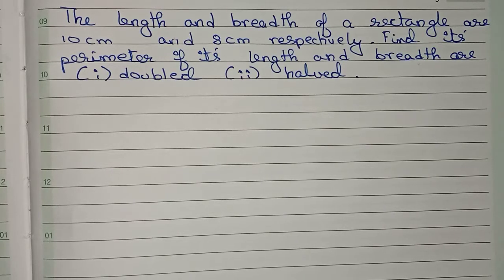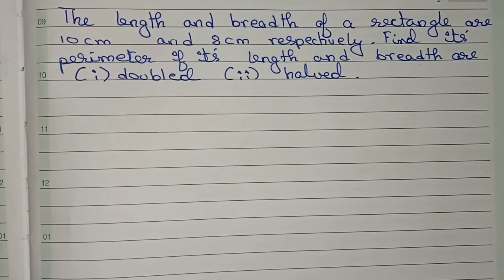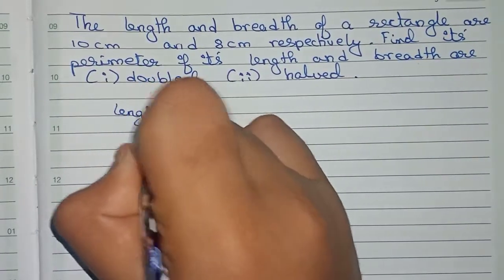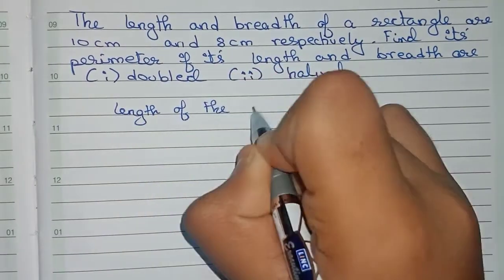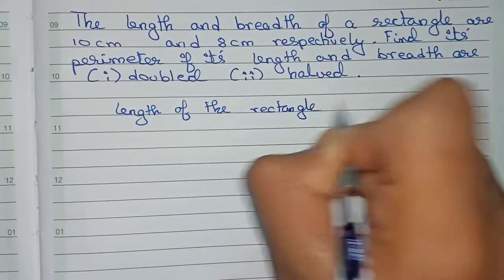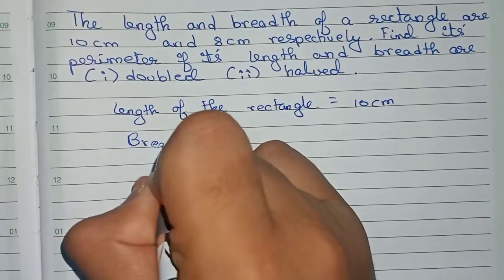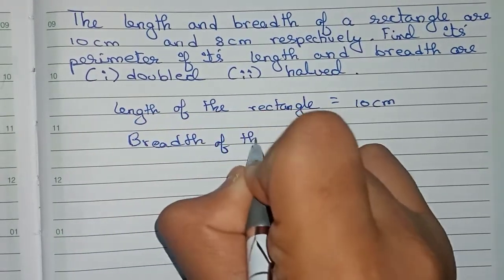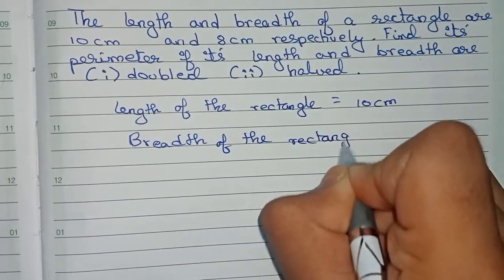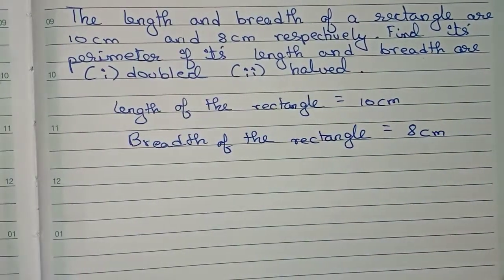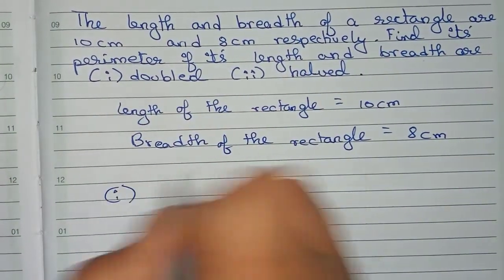Hello guys, welcome to this video. Our question is: the length and breadth of a rectangle are 10 centimeters and 8 centimeters respectively. Find its perimeter if its length and breadth are doubled and halved. So first, we have length of a rectangle equals to 10 centimeters, and the breadth is equal to 8 centimeters.